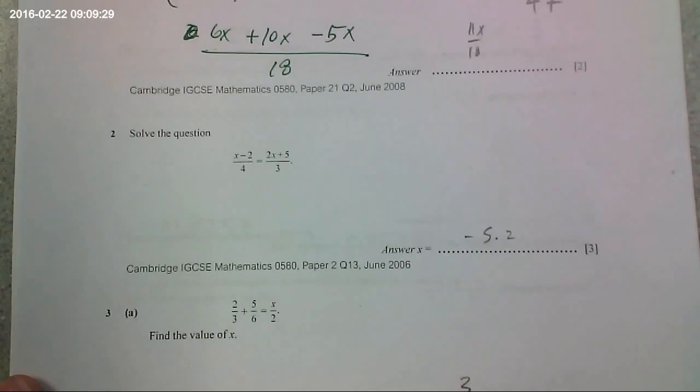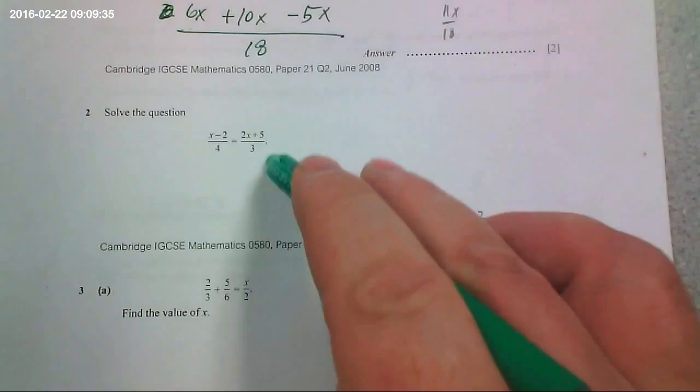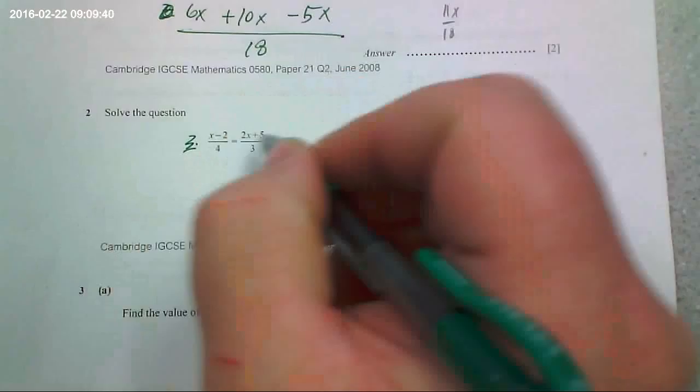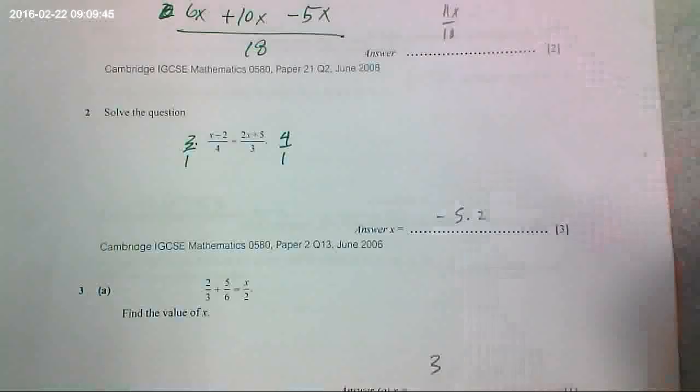So, common denominator. Alright. 2x. No. 6x. Man. Plus 10x minus 5x over 18. Is that what you did? Yeah. Yeah. Okay. I'm really tired. It's been a long weekend.